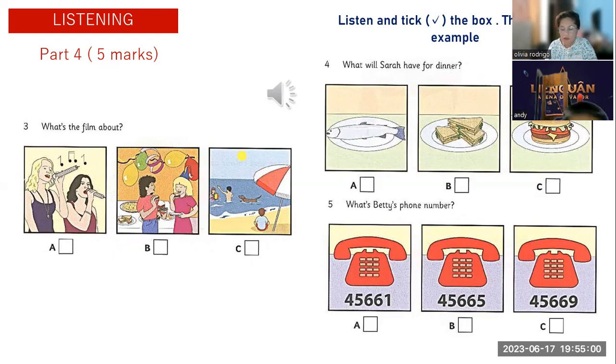Four. What will Sarah have for dinner? Will you have dinner at home? We're going to have fish tonight. No, I won't have time. Can I take a sandwich with me? No, buy a burger in town. That will be better. Okay. Five. What's Betty's phone number? I'll be home at nine o'clock. Betty's mum is going to bring us home in her car. All right, not a minute later. What's her telephone number? It's 45 double six five, isn't it? No, it's 45 double six one. Okay, well have a great time and don't be late. Nine, remember.